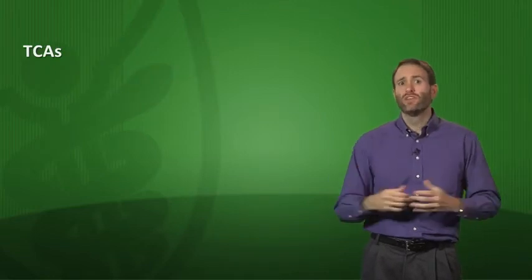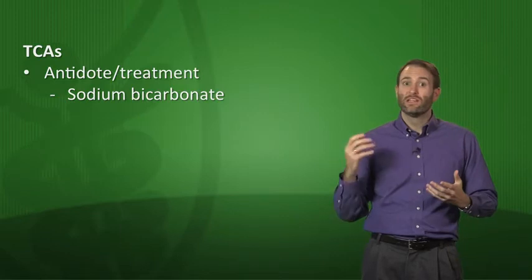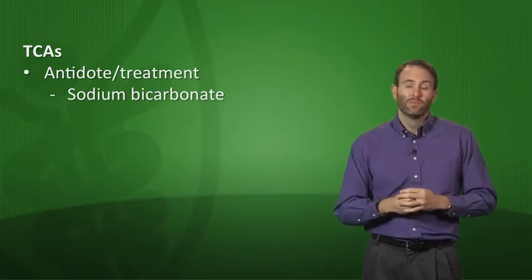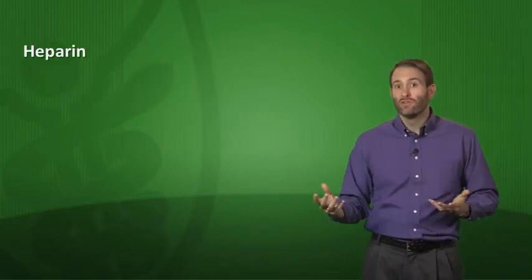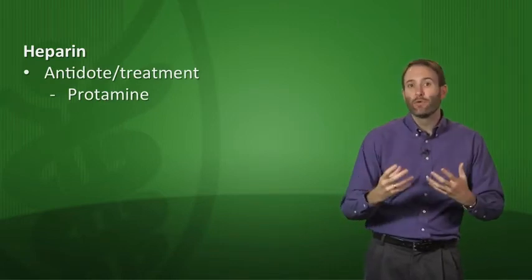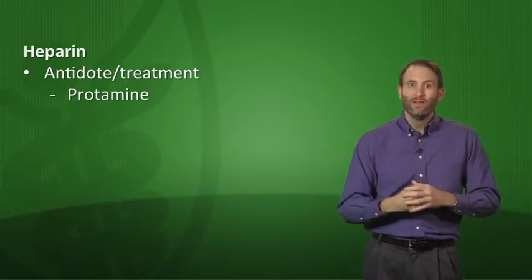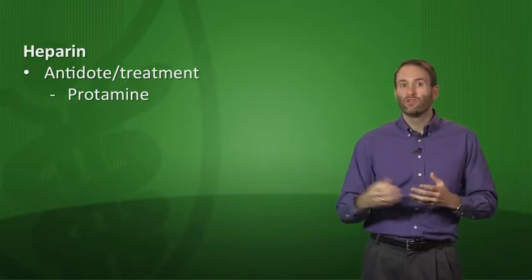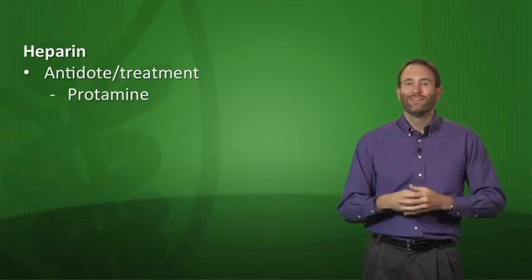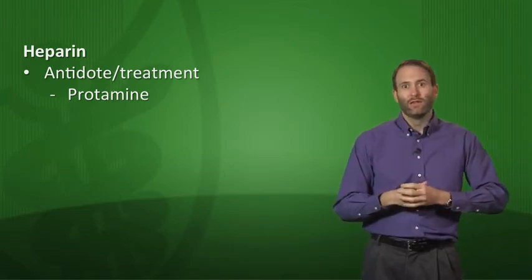Next, we have TCA overdose. Sodium bicarb is your treatment of choice, just like we saw with salicylate overdoses. Next, we have heparin overdose. We're going to treat this with protamine. I think about this as the H in heparin. I think of that as being maybe an H plus molecule or a proton. You can use protamine to treat that proton. This is a heparin overdose. I know it's a little loose association, but we can use anything we can to remember this stuff.